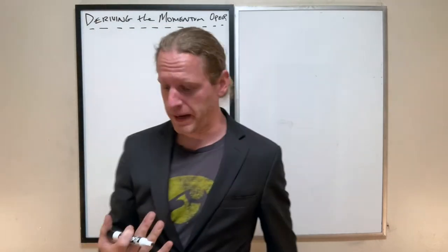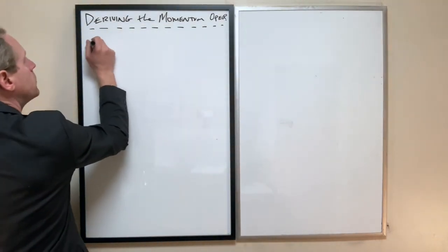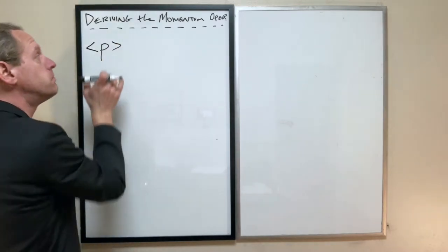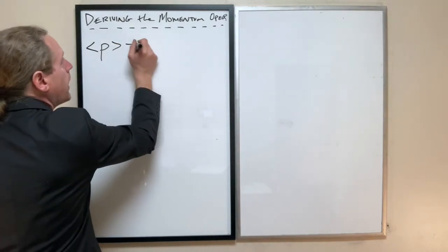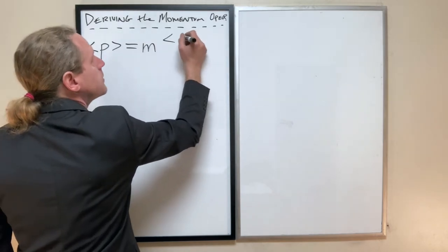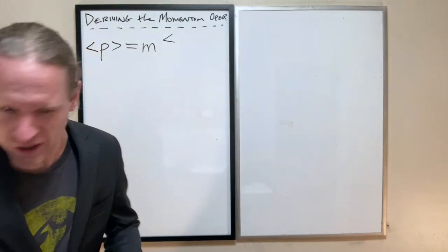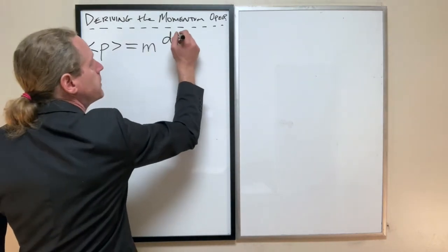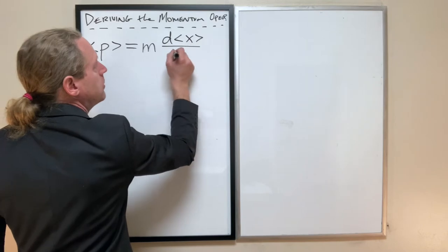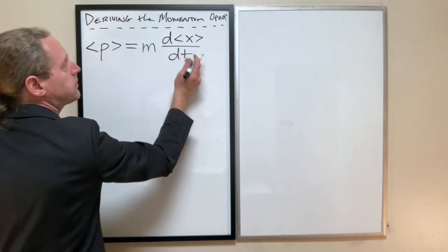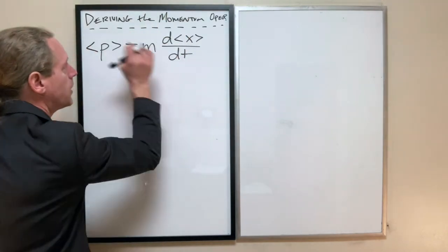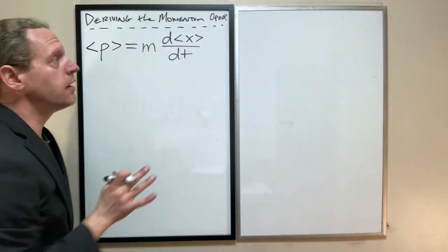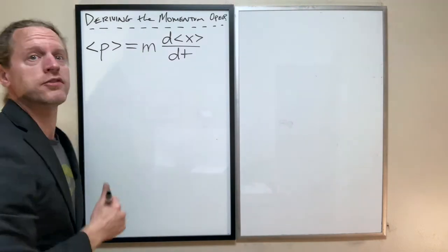try to derive what the momentum operator is. And as a reminder, we're going to start off by doing so using this equation. We're going to calculate the expected momentum by multiplying the... I've already screwed up. Dang it.